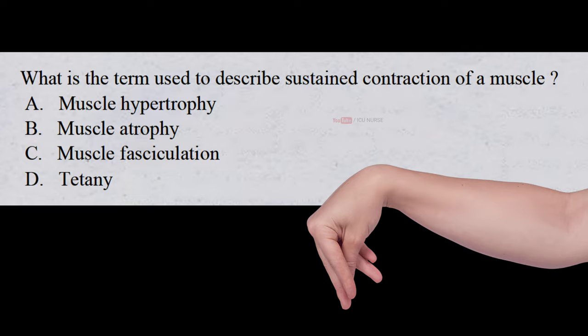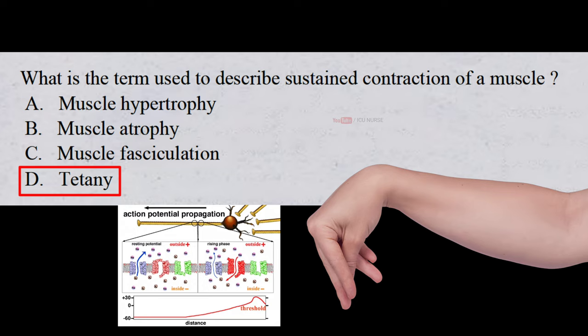What is the term used to describe sustained contraction of a muscle? A. Muscle hypertrophy. B. Muscle atrophy. C. Muscle fasciculation. D. Tetany. And the correct answer is D. Tetany. Sustained contraction of a muscle in tetany is evoked when the motor neuron that innervates a skeletal muscle emits action potentials at a very high rate.